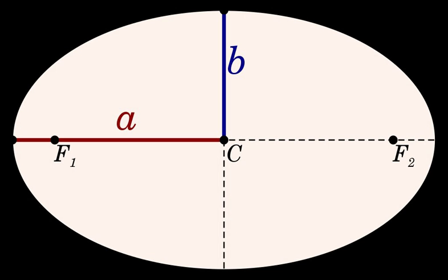Either half of the minor axis is called the semi-minor axis, of length b. The semi-minor and semi-major axes lengths appear in the equation of the hyperbola as follows: x²/a² − y²/b² = 1. The semi-minor axis is also the distance from one of the foci of the hyperbola to an asymptote.